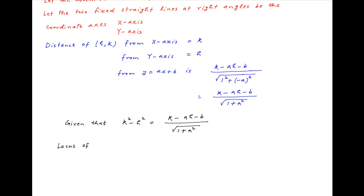Now the locus of the point P is obtained by replacing h with x and k with y. And therefore the required locus is root of (1 plus a squared) times (y squared minus x squared) equals y minus ax minus b.